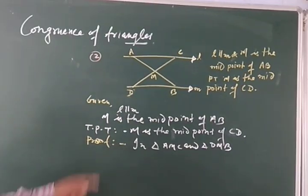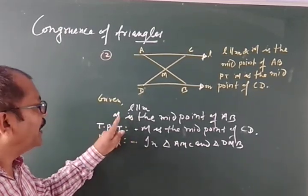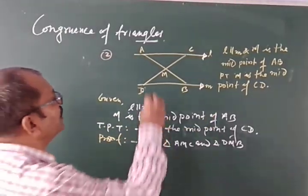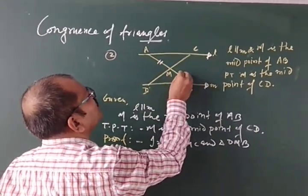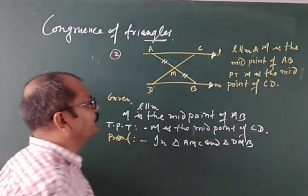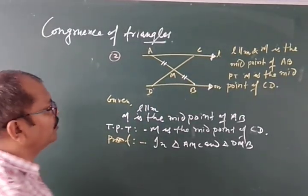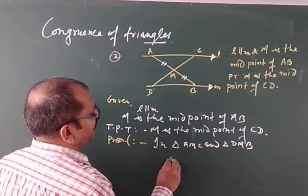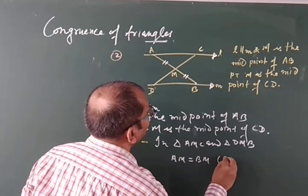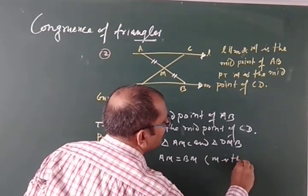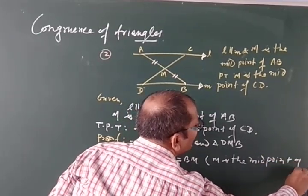Then you have to mention something in the figure if it is given. M is the midpoint of AB. So you will write, M is the midpoint of AB means AM is equal to BM. Right, AM is equal to BM in brackets, because M is the midpoint of AB.